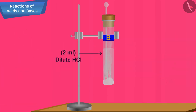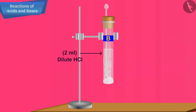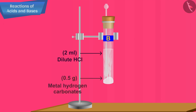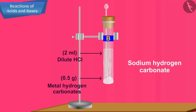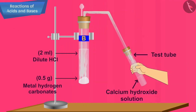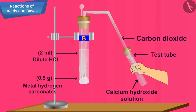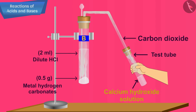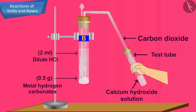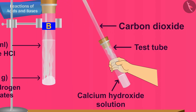We can repeat this experiment by replacing metal carbonate with metal hydrogen carbonate, that is, sodium hydrogen carbonate. Again we will get carbon dioxide gas, which will turn lime water milky. On passing excess carbon dioxide, the milky lime water will become clear once again.